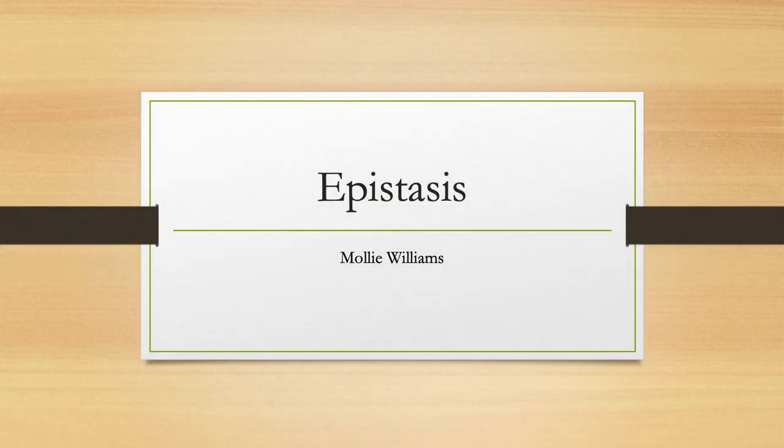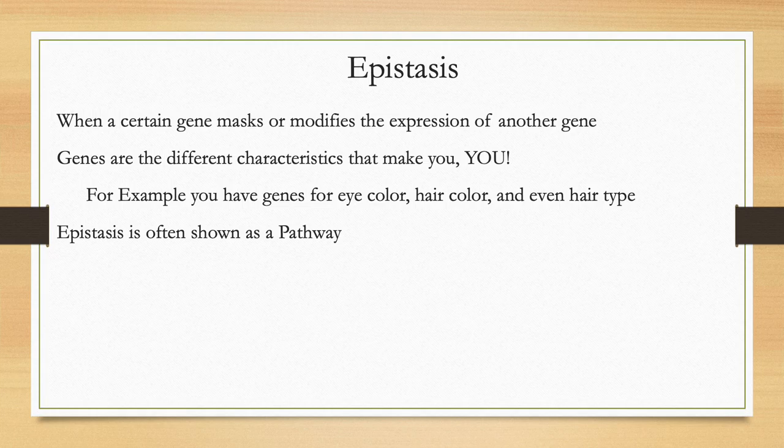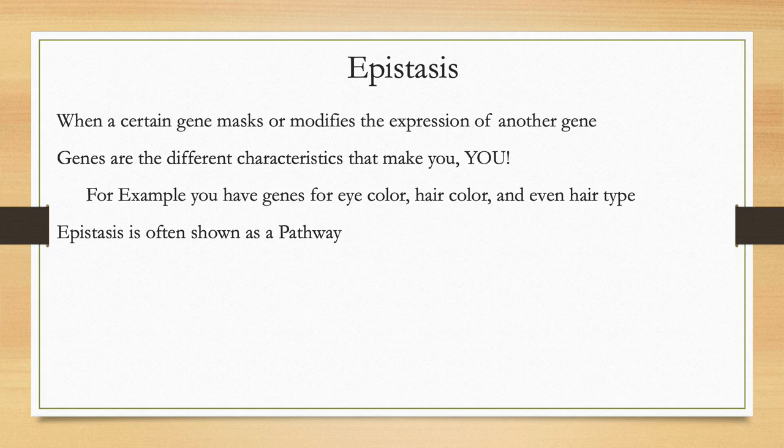Epistasis occurs when a certain gene masks or modifies the expression of another gene. What does that really mean? A gene is like all of the characteristics that come together and make you you.